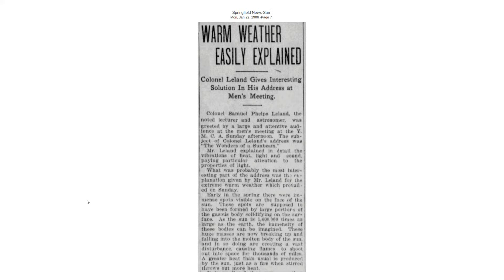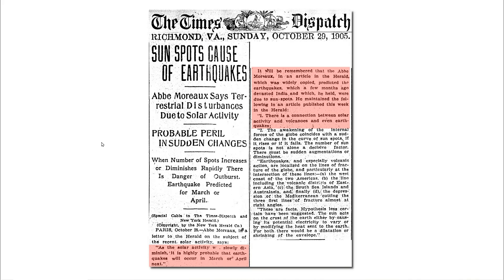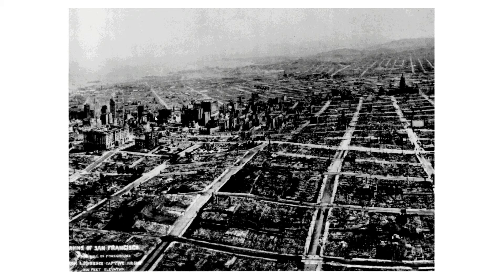Here's another article I found on newspapers.com: 'Warm Weather Easily Explained.' On January 22nd, 1906, astronomer Samuel Leland explained that the warm weather was due to giant sunspots breaking up. Another famous astronomer, Abby Moreau, said the decline of the sunspots was likely to cause a large earthquake in March or April 1906. And then on April 18th, 1906, San Francisco was largely destroyed by a massive earthquake and fire.